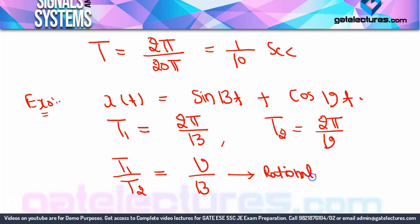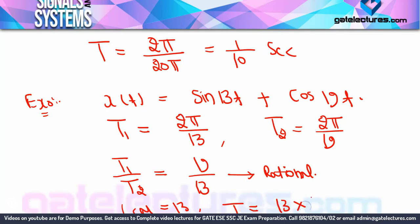Since T1/T2 = 19/13 is rational, the overall signal is periodic. Take LCM of denominator from Step 2: LCM of 13 = 13. Overall time period = LCM × T1 = 13 × (2π/13) = 2π seconds.